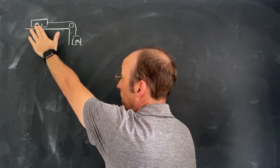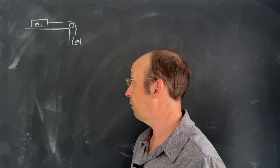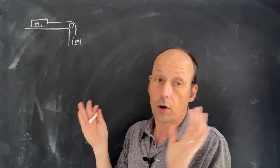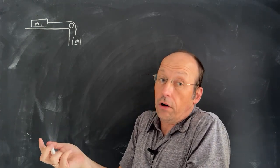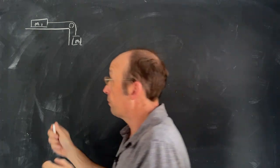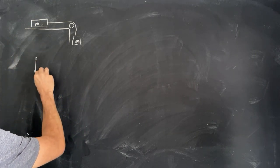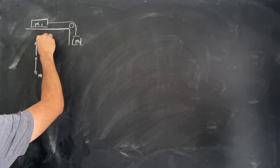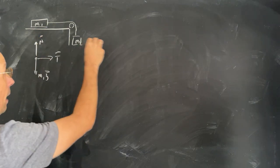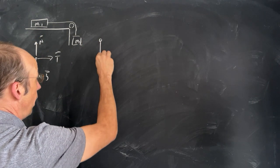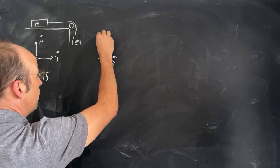I have a mass M1 on a frictionless plane connected to a mass M2 hanging over the edge. I let it go and I want to find the motion. So let's draw force diagrams for both. For mass 1, I have the gravitational force pulling down M1g, the normal force N, and then the tension T. For mass 2, I have the gravitational force M2g and then the tension pulling up.